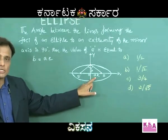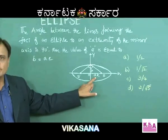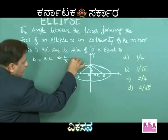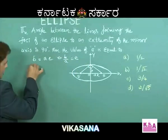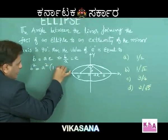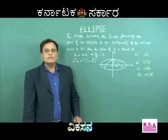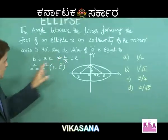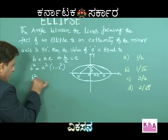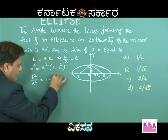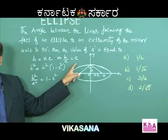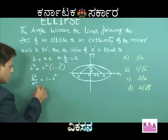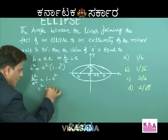Since the lines joining the foci to one extremity of the minor axis are perpendicular — that means the angle is 45-45-90 — the triangle is right-angled isosceles, so b = ae. Dividing both sides by a: b/a = e. Using the standard formula b² = a²(1 - e²), cross-multiplying gives b²/a² = 1 - e². Since b/a = e, we get e² = 1 - e².